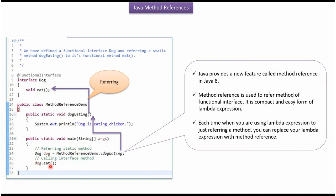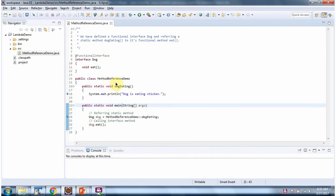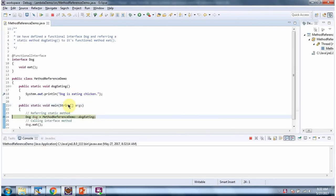So when you call the eat method of the dog object, it will call the dogEating method and it will print 'dog is eating chicken'. Here you can see the same program. I am running this program in debug mode. Here you can see the output.